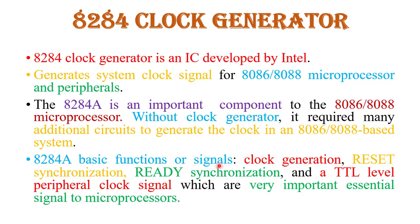Now the basic functions or signals of the 8284. It generates the clock signal for the 8086 or 8088 microprocessor, the reset synchronization signal, the ready synchronization signal, and other peripheral clock signals which are essential for the microprocessor.